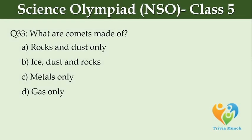What are comets made of? Option A, rocks and dust only. Option B, ice, dust, and rocks. Option C, metals only. Option D, gas only.